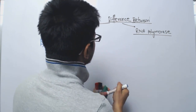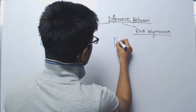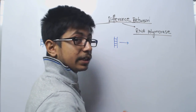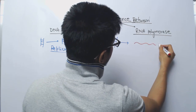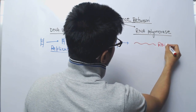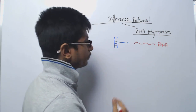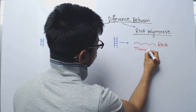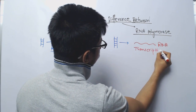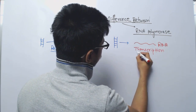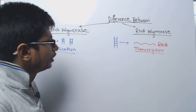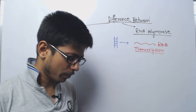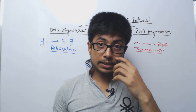RNA polymerase is required for the production of RNA, which is a single-stranded molecule, from the DNA. So it helps in the transcription process. This is the first difference between DNA polymerase and RNA polymerase.